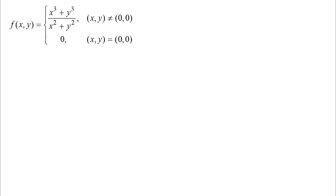We're going to look at this piecewise defined function and think about finding partial derivatives of this function, specifically at the point (0, 0). Just like in calculus 1, when you think about derivatives of piecewise defined functions, you really have to go back to the idea of the limit definition. That is because when you're looking at the function at one point and around that point, you might be looking at different pieces of the function definition.